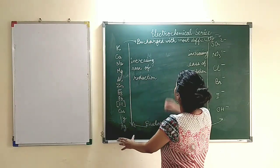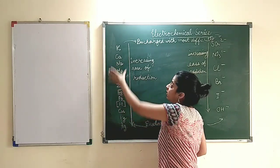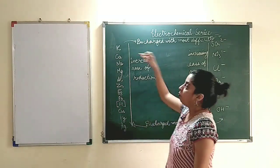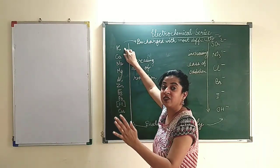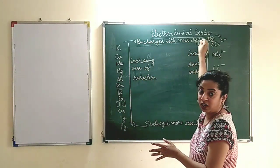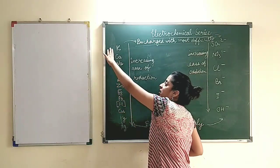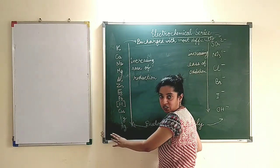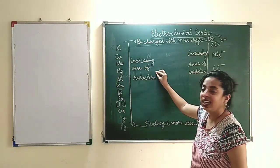In the electrochemical series, metals are arranged according to their reactivity. Elements at the top are most reactive — they can lose electrons very easily and form ions — but it is very difficult for them to accept electrons and deposit as metal. Therefore, they are discharged with most difficulty at the cathode. Whereas metals lower in the series are easily discharged. As we move down, there is increasing ease of reduction.